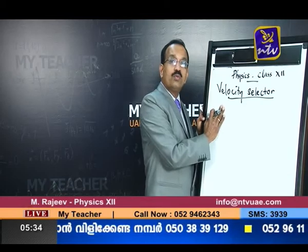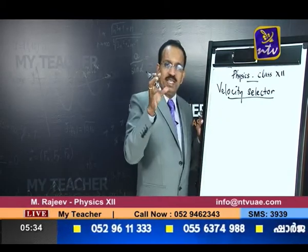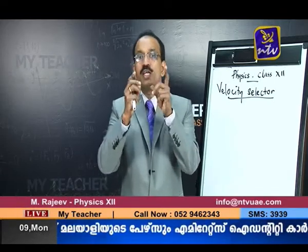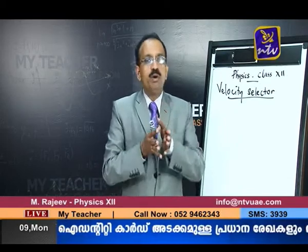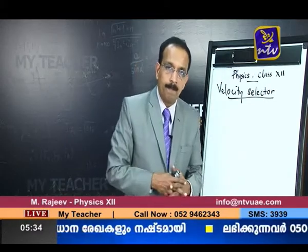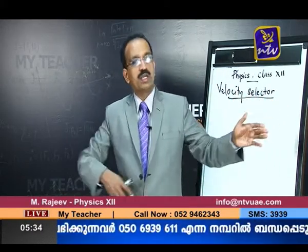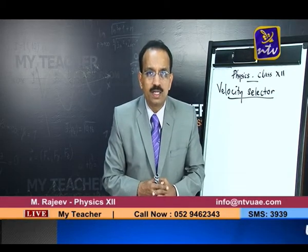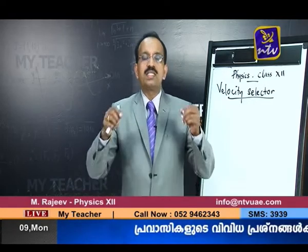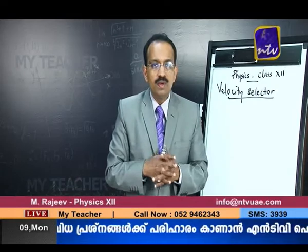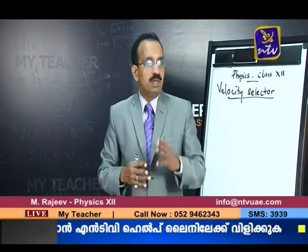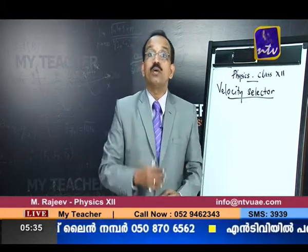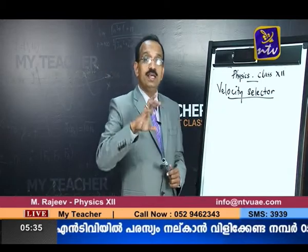First, let us explain velocity selector. The basic idea about velocity selector — we want to select particles of a particular velocity. Suppose we have a stream of charged particles with very different velocities, maybe varying from 5 meters per second to 20 meters per second. Irrespective of mass or charge, we would select only those particles possessing a particular velocity, filtered out using an arrangement of electric field and magnetic field together.